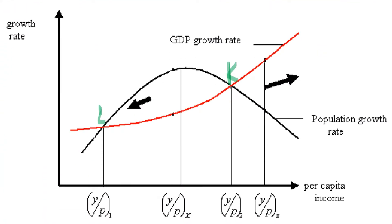In the above figure, the Y-axis measures the population growth rate and the income growth rate, whereas the X-axis measures the per capita income growth rate. The economy is at the low level equilibrium trap at point L, because beyond point L up to point K, the population growth rate is faster than the income growth rate and per capita income falls, bringing the economy back to point L. The trap operates between point L and K.